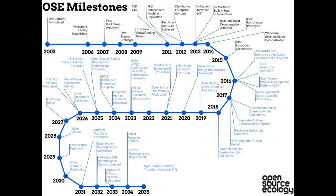That's where the Distributive Enterprise concept comes about. The last point of developing any technology is you start with product designs and then go to productization. What we do is open source both the machine designs and then the actual enterprise related to that, so we can create that open source economy which Open Source Ecology is after. We continue with the development process all the way until we reach the Distributive Enterprise phase, which is really the last phase of any technology of interest.